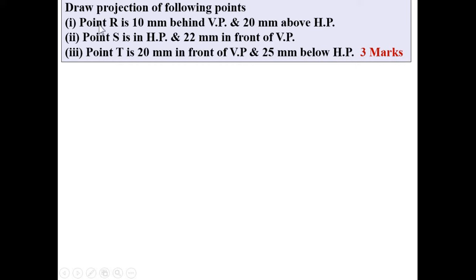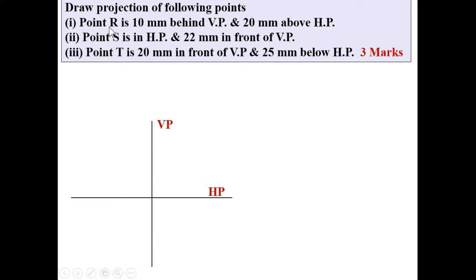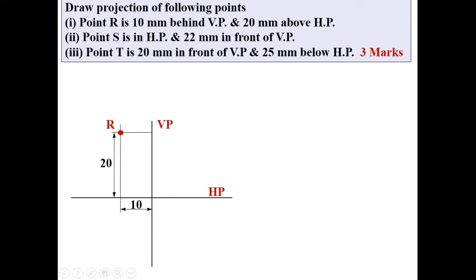The weightage in the examination is 3 marks. Let's start with point R. First, draw the horizontal line - that is your HP - and then draw the vertical line - that is your VP. HP means horizontal plane, VP means vertical plane. Now locate point R: it is 10 mm behind VP, so draw the line 10 mm behind VP, and 20 mm above HP. The intersection of these two lines is the location of point R. Mark this point as R.